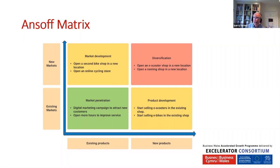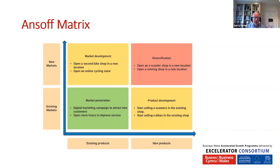On the right-hand bottom of the chart in yellow, we have Product Development — taking new products to existing markets. We're bringing new products and trying to sell them to our existing customers. For the bike shop, that would be starting to sell e-scooters or e-bikes in the existing shop to customers we already have. The probability of success and risk factors for Product Development are about the same as Market Development — providing you approach it in an objective and planned manner, the probability of success is very positive.